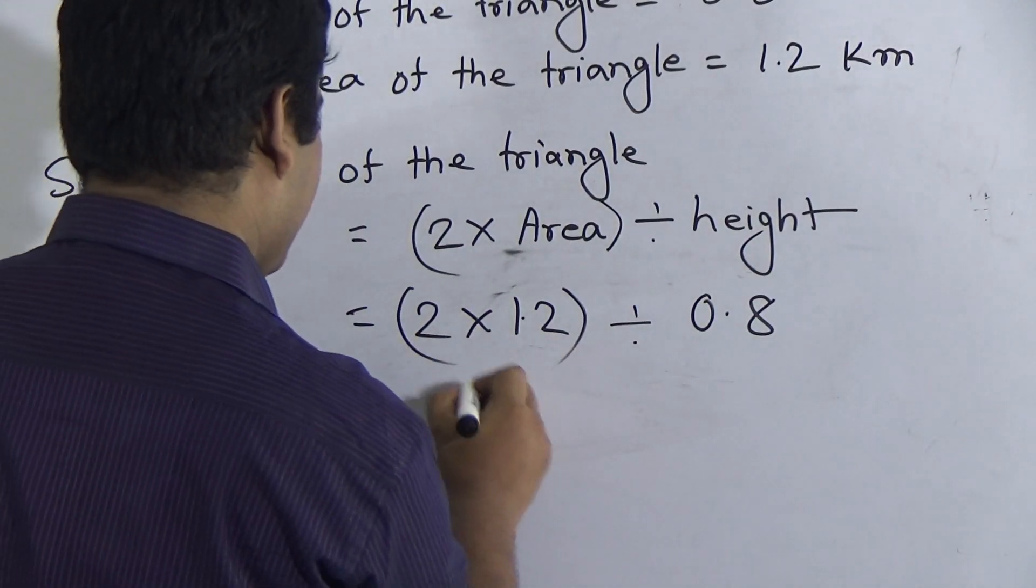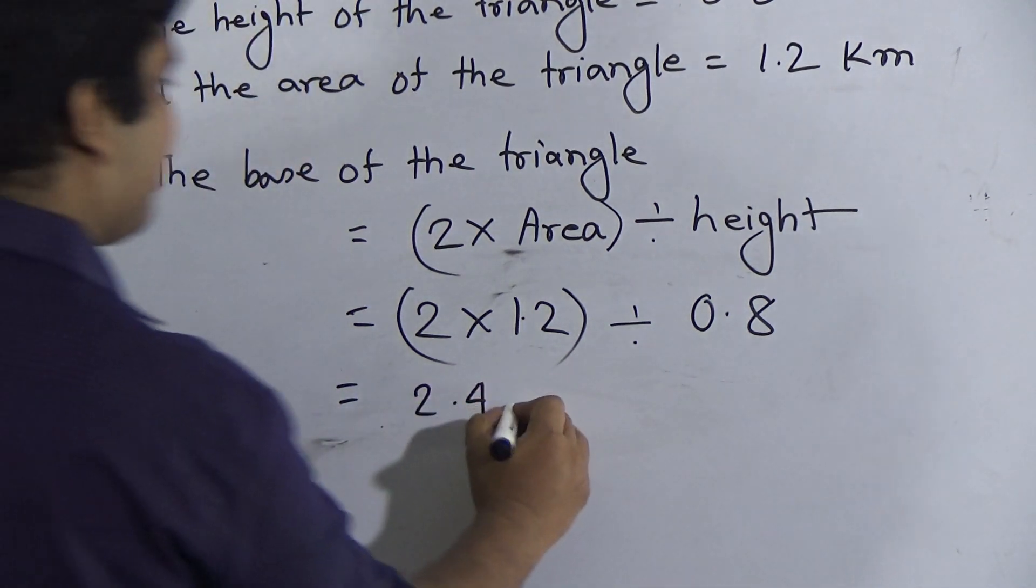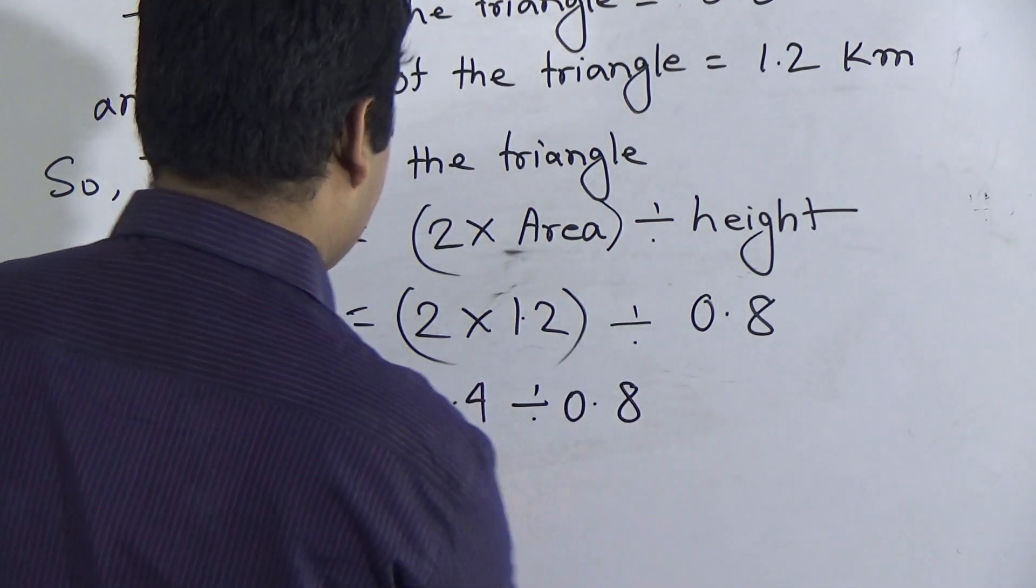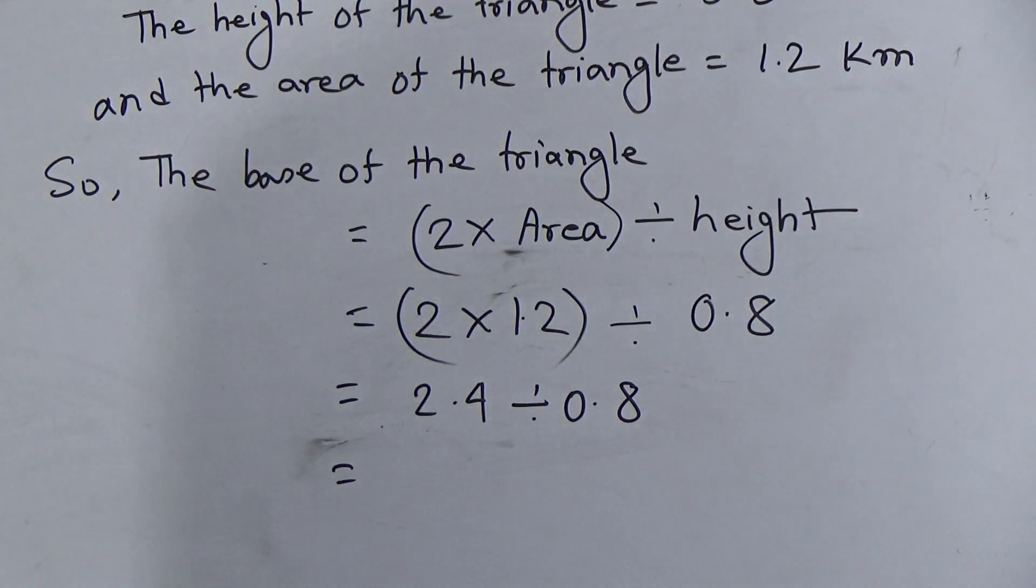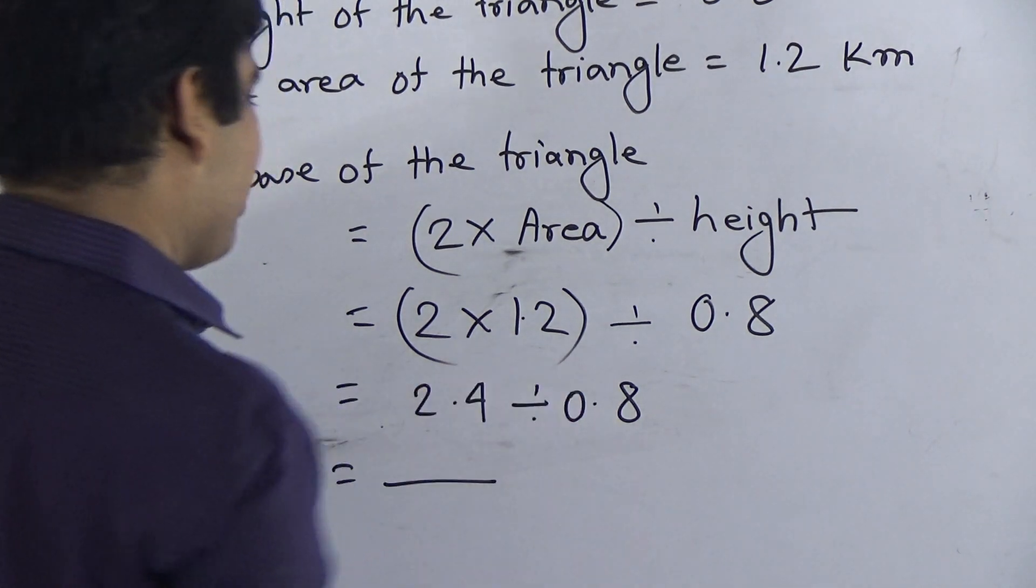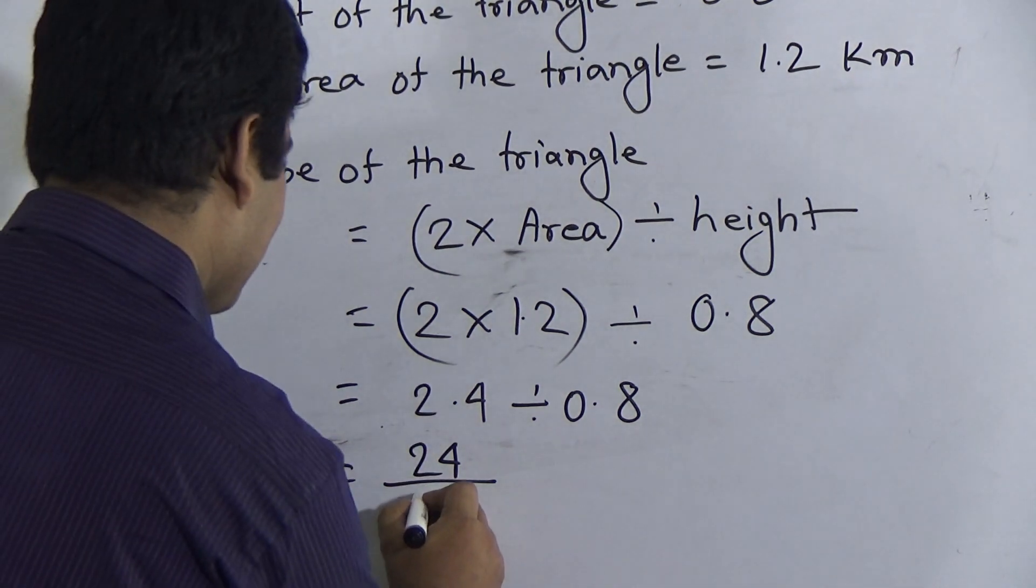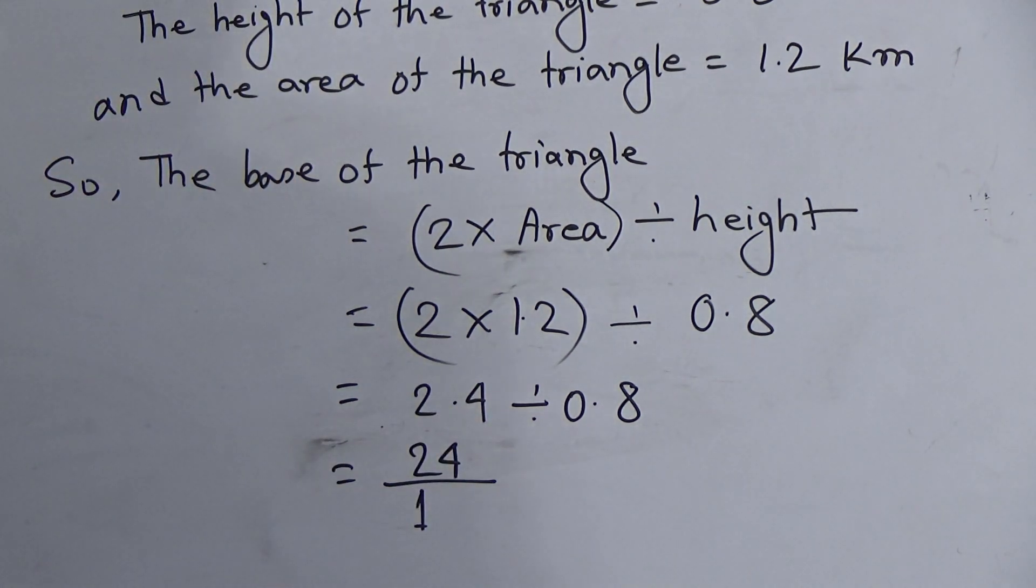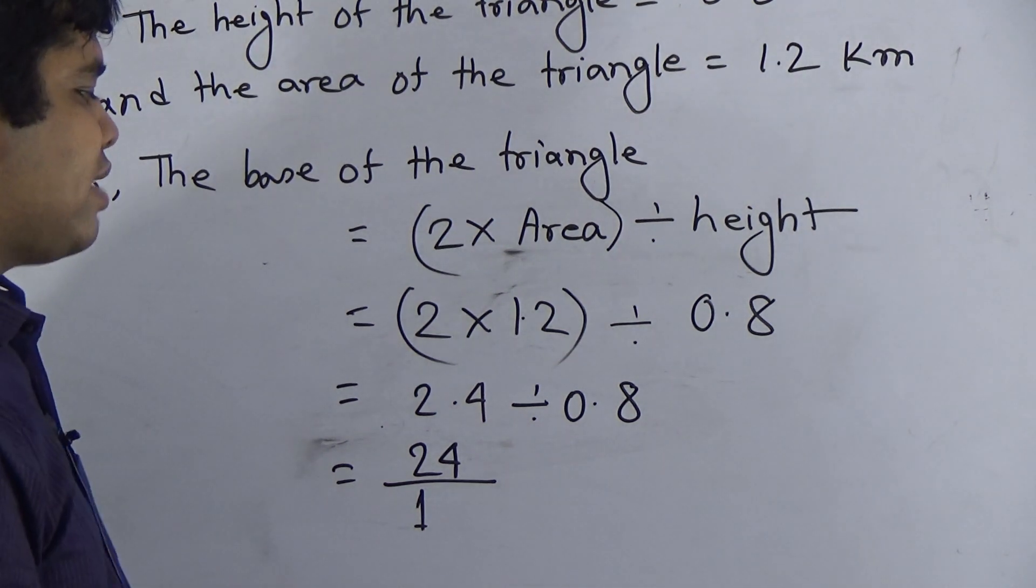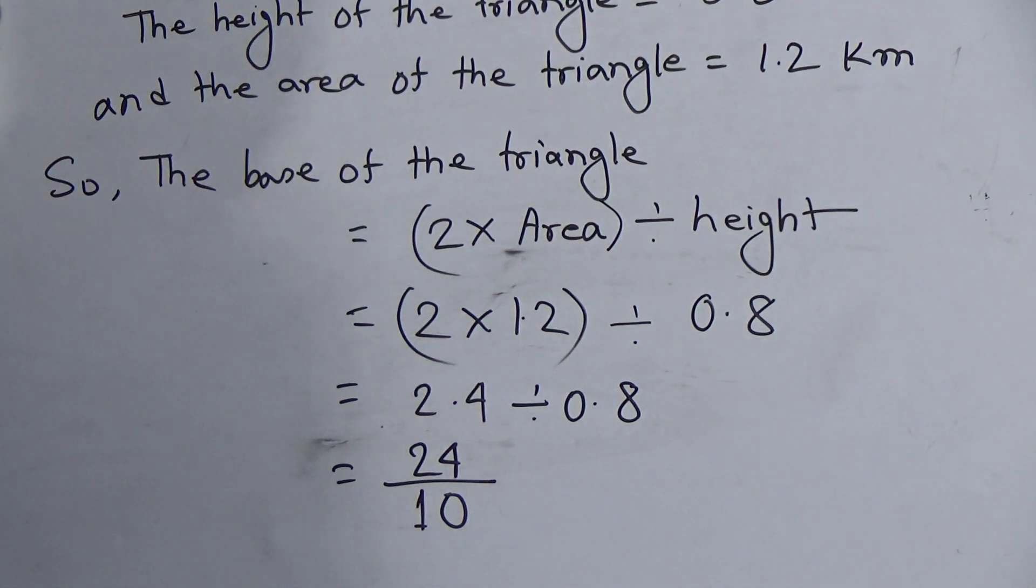After that, if you do multiplication of 1.2 and 2, then we get 2.4 divided by 0.8. Now, we convert this decimal number into fraction. So, at first, we write this 2.4 without point. That means, 24 as a numerator. And for this point, I write here 1. And after point, how many digits? After point, only one digit. As there is only one digit after point, we give here one zero. So, 24 by 10 is the fractional number of the decimal number 2.4.